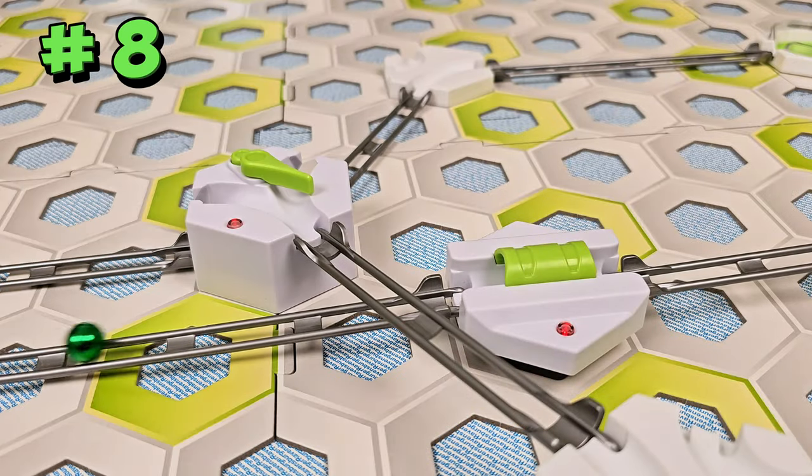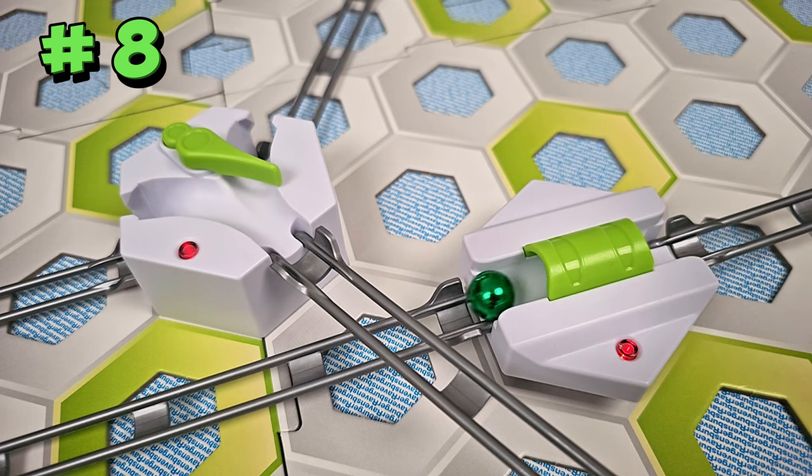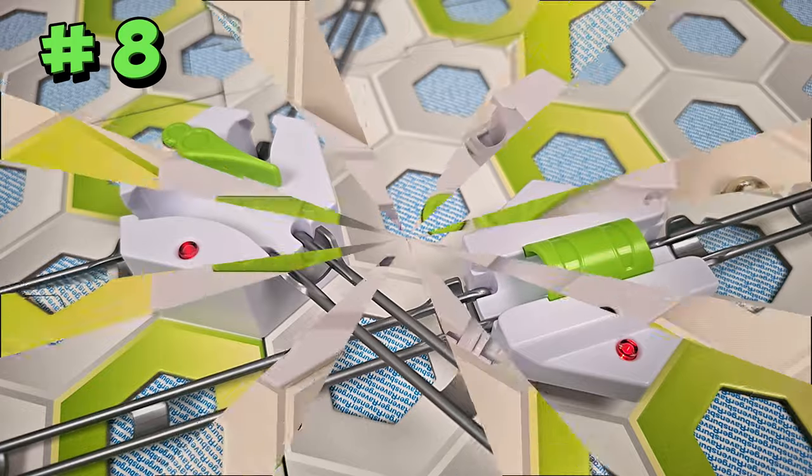When a marble goes through the trigger, the trigger sends a wireless signal to activate the power switch or any other power receiver elements which are set to the same color as the trigger.